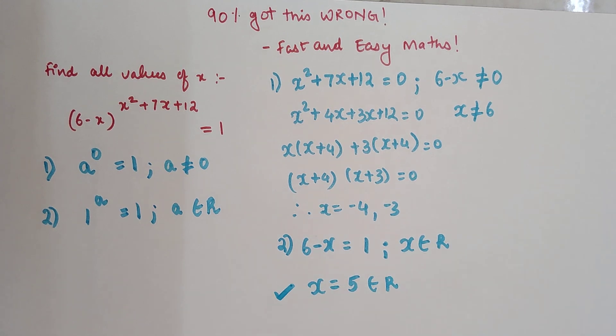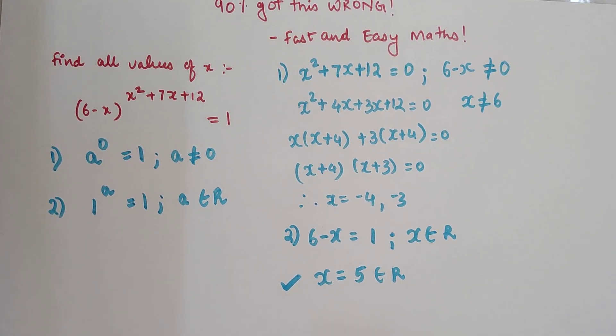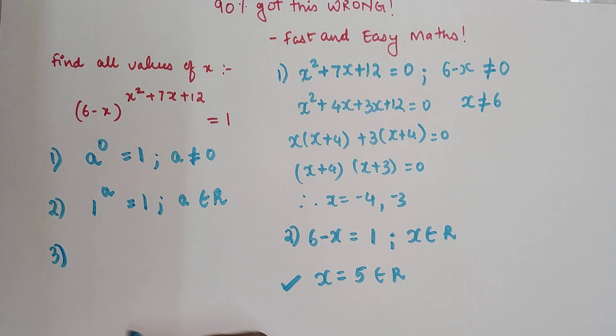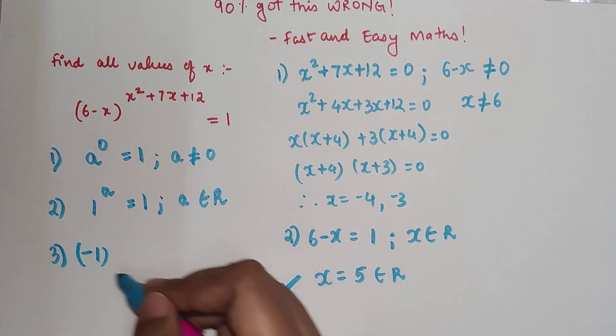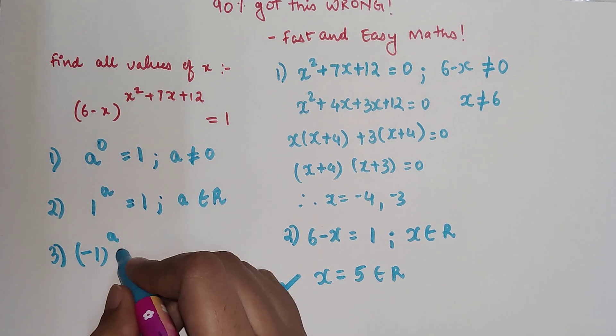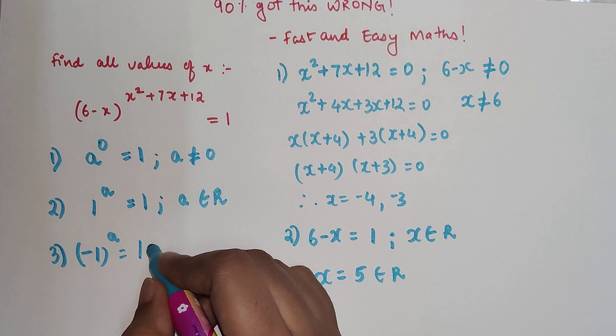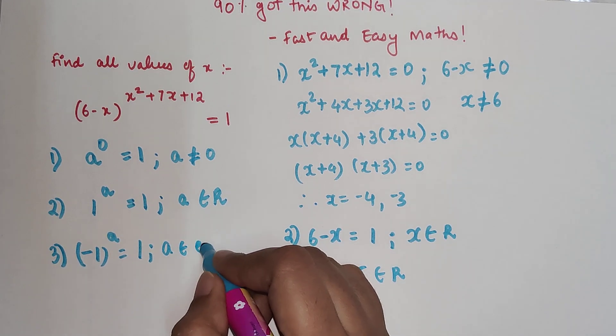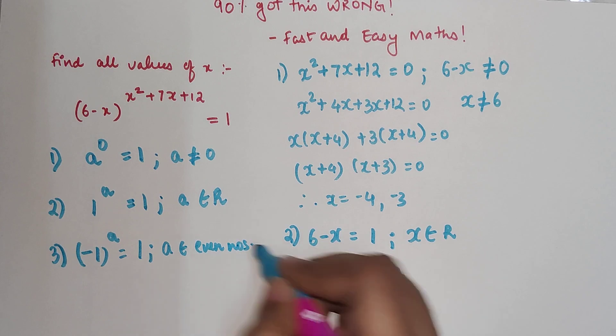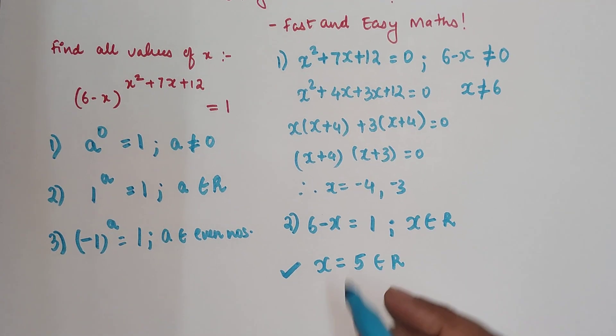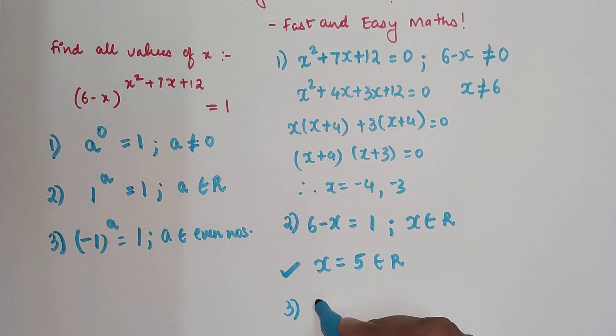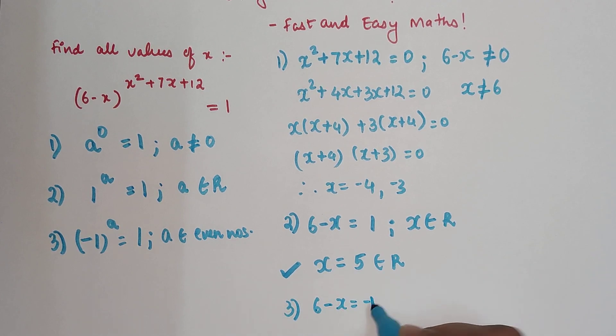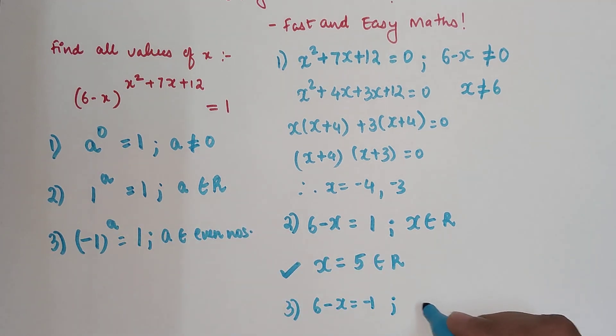So now coming to the third point, we can say that -1, a negative 1 raised to a, can be equal to 1 only and only if a belongs to even numbers. So we have 6 - x is equal to 1, provided a, which is x² + 7x + 12, belongs to even numbers.